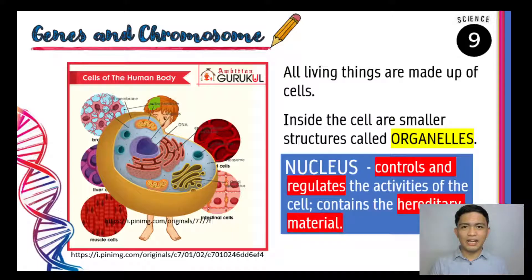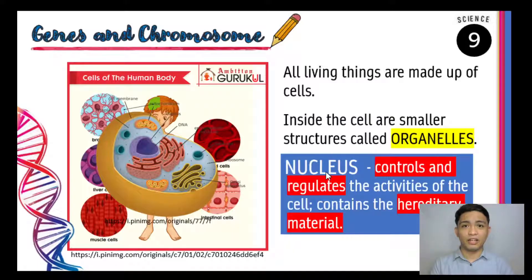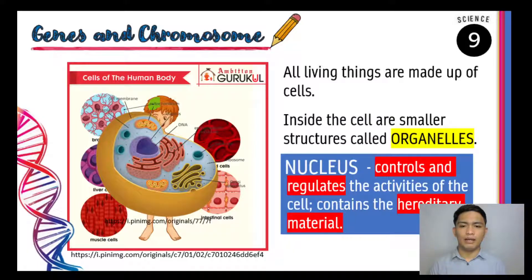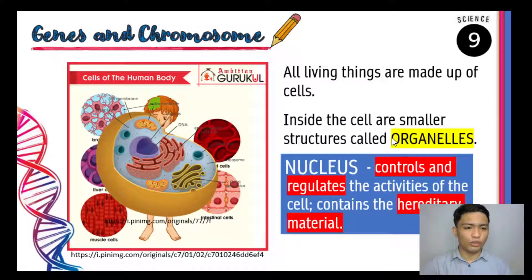The nucleus acts as the brain of the cell. It's the control center because it controls and regulates the activities inside the cell. Another important thing: it contains the hereditary material — the information that tells us what our characteristics will be, such as hair color, eye color, skin tone, blood type, and many more. That hereditary material is inside our nucleus.